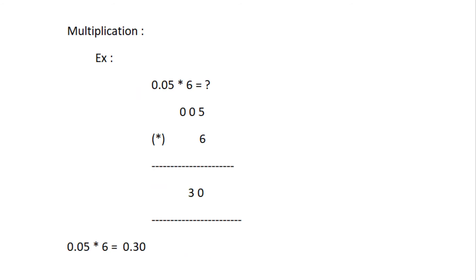In multiplication, multiply as in whole numbers ignoring the decimal. Then count the total number of decimal places in both numbers, and starting from the right, count the same number of decimal places in the product and place the decimal point there. For example, 0.05 multiplied by 6. Multiply these two numbers as whole numbers — we get 30. Here the total number of decimal places is 2, so put the decimal point two places from the right. The answer is 0.30.